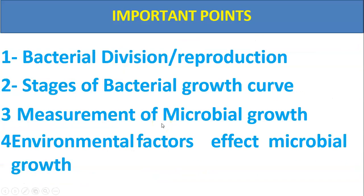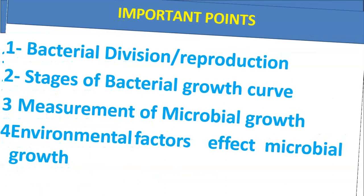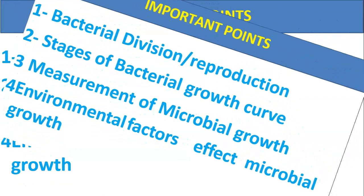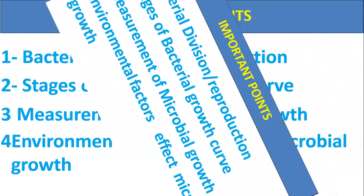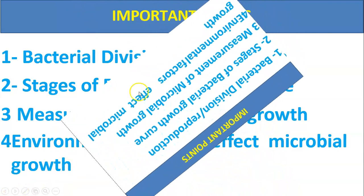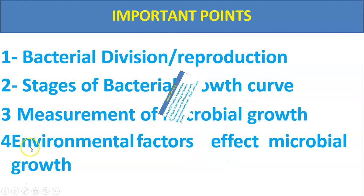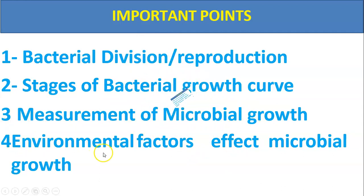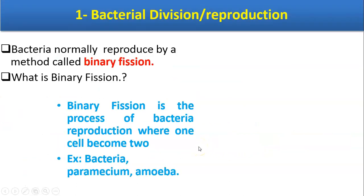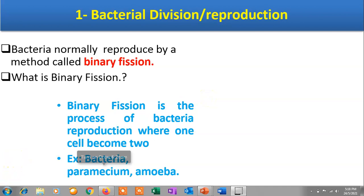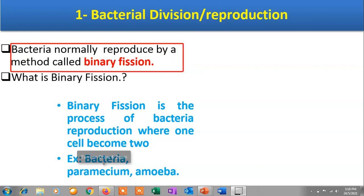The important points to be covered in this topic are: bacterial division or reproduction, stages of bacterial growth, measurement of microbial growth, and environmental factors affecting growth of microorganisms. The first topic is bacterial division or reproduction. Bacteria normally reproduce by an asexual mode of reproduction called binary fission.